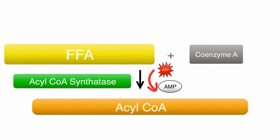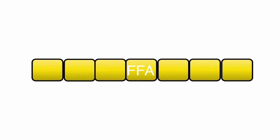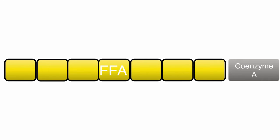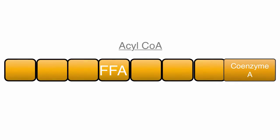The free fatty acid is made up of a long chain of carbons. The typical number of carbons within one free fatty acid usually varies between 12 and 18, but other numbers outside this range have been observed.